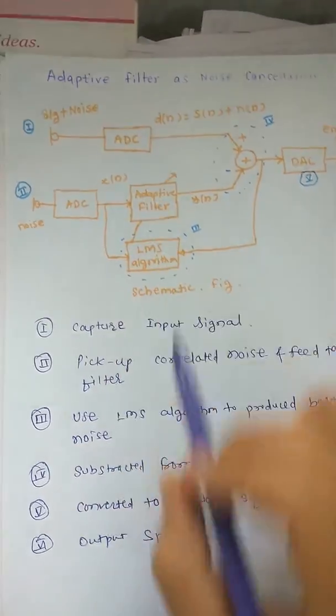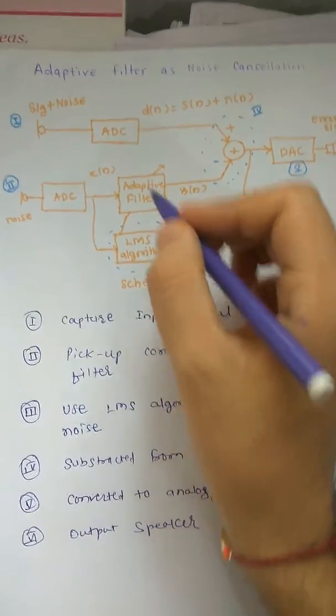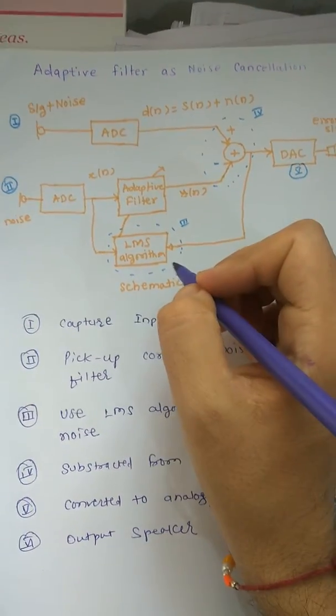Then third, use LMS algorithm to produce the best estimation noise. This is the third thing which is the adaptive filter which helps to produce best estimation noise.